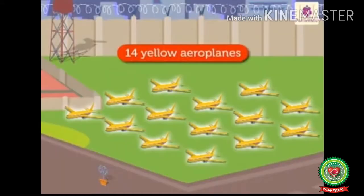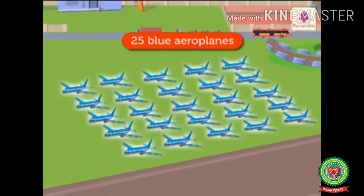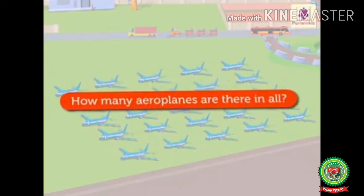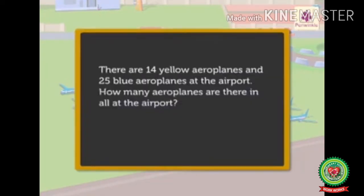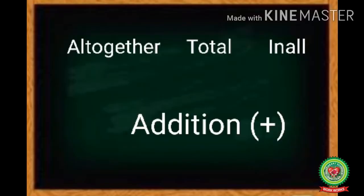Let us understand story sums through this video. There are 14 yellow airplanes and 25 blue airplanes at the airport. How many airplanes are there in all? The information given is: 14 yellow airplanes and 25 blue airplanes at the airport. We have to find out the total number of airplanes. Remember, whenever the words 'altogether', 'total', or 'in all' appear in a statement, it means we will do addition.